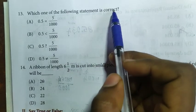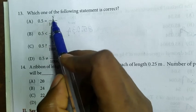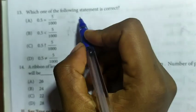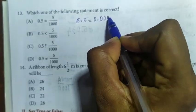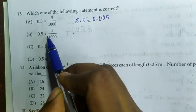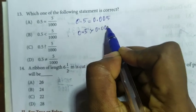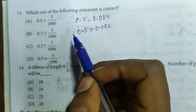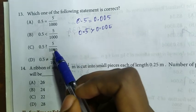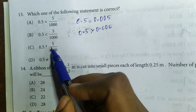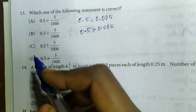13th question: which one of the following statements is correct? Option A: 0.5 equal to 5 by 1000 — not correct, since 5 by 1000 equals 0.005. Option C: 0.5 is greater than 0.005. Option D: 0.5 is not equal to 5 by 1000, which is correct. Answer is option D.